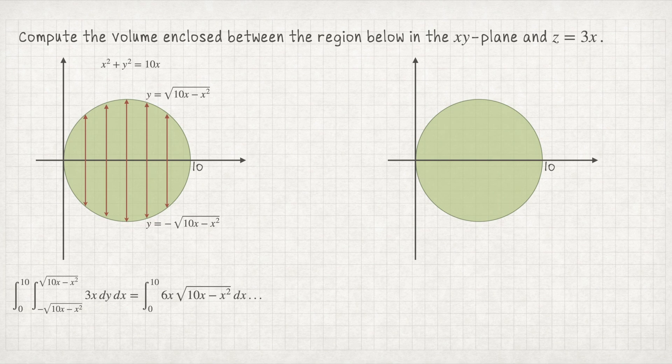The issue is that you first antidifferentiate with respect to y, ending up with twice the square root of (10x − x²) times 3x — giving the integral from 0 to 10 of 6x√(10x − x²). This is actually quite tricky to integrate and more challenging than the polar approach, since you'll end up needing some kind of polar conversion. Keep in mind the final answer is 375π.